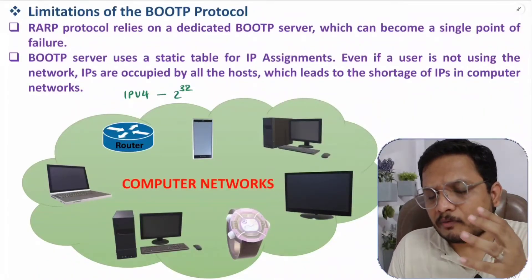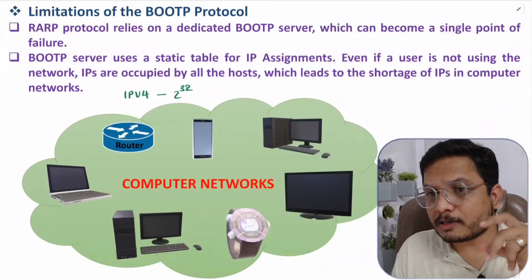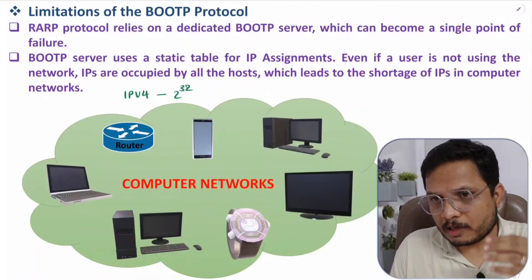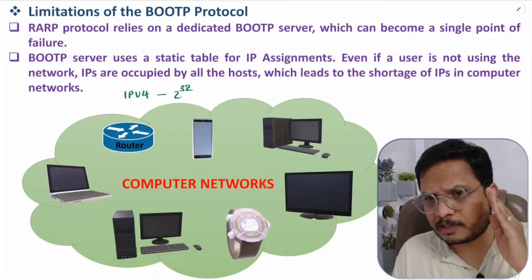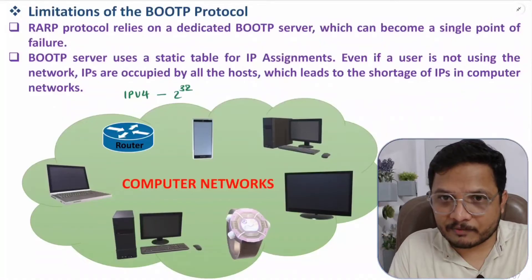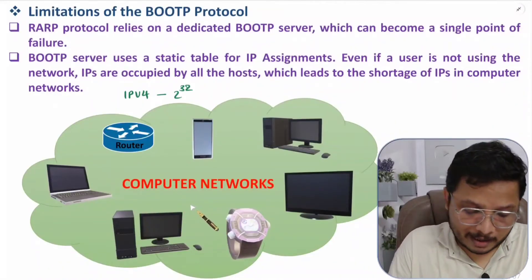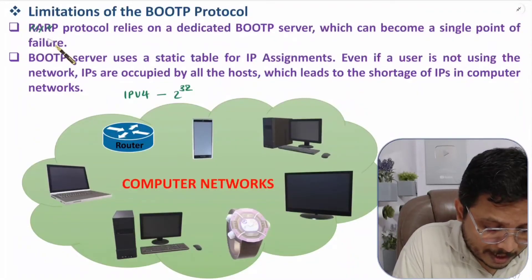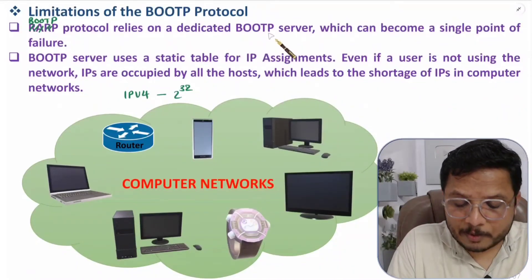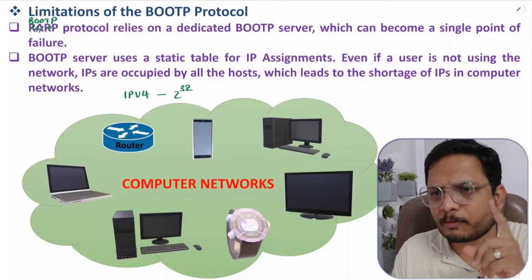In IPv4, we can have at most 2^32 IP addresses — about 4 billion. But with a global population beyond 7 billion, and each person using multiple devices, the static table means IPs cannot be reused, causing severe shortages. A second limitation is the single point of failure: if the dedicated BOOTP server fails, the entire system fails.